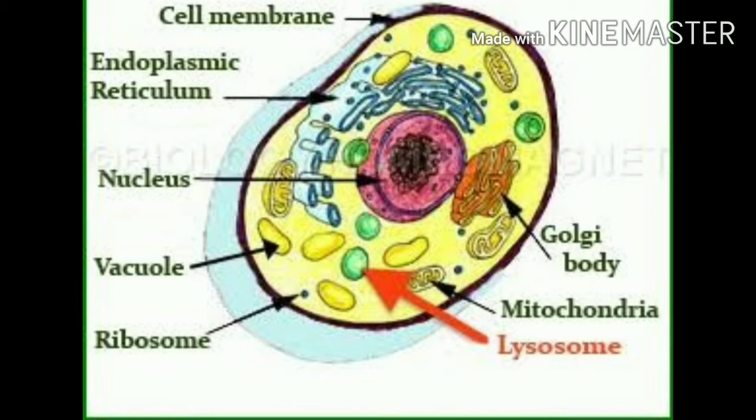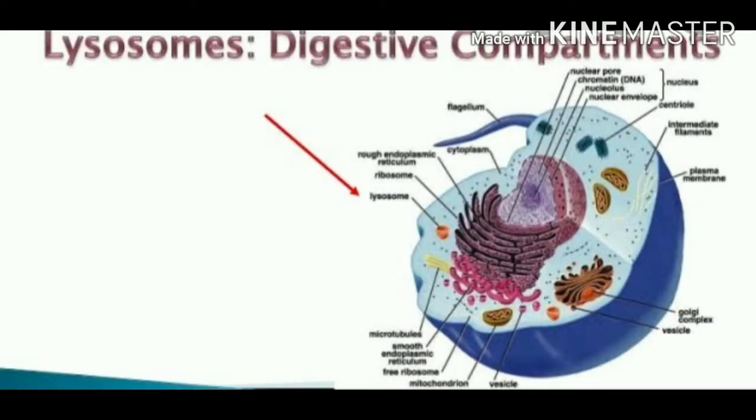Now, if we talk about the structure, lysosomes are simply very tiny spherical-like structures and these are evenly distributed in the cytoplasm. They are surrounded by a single membrane and contain powerful enzymes.